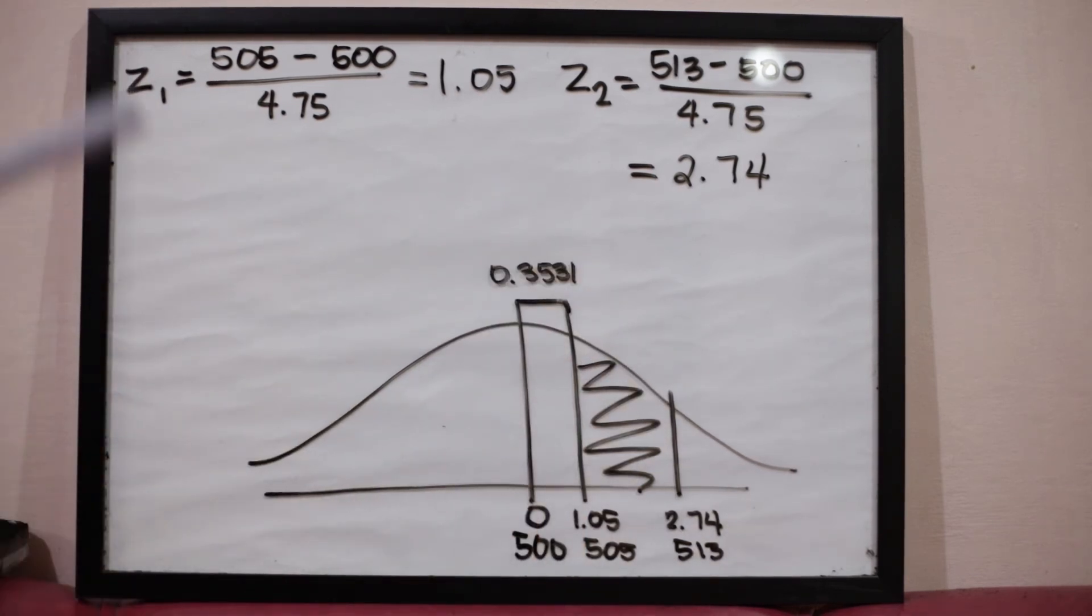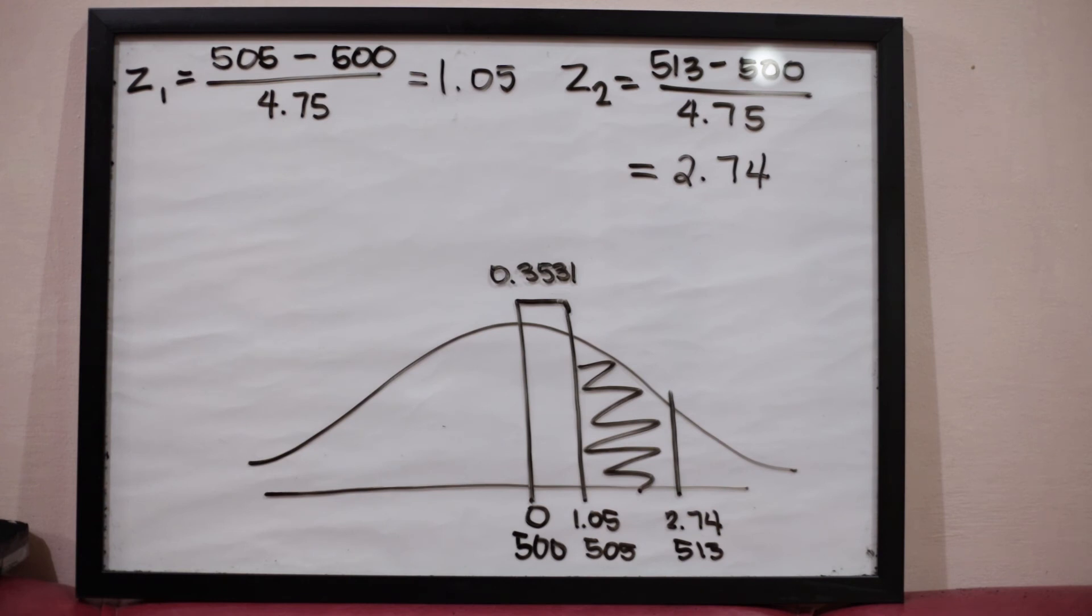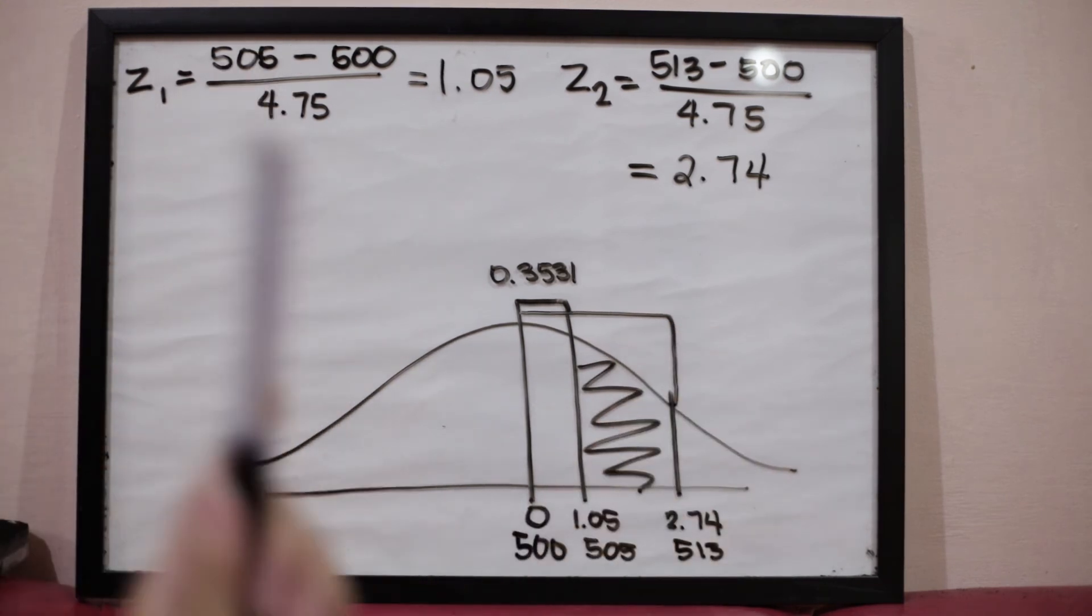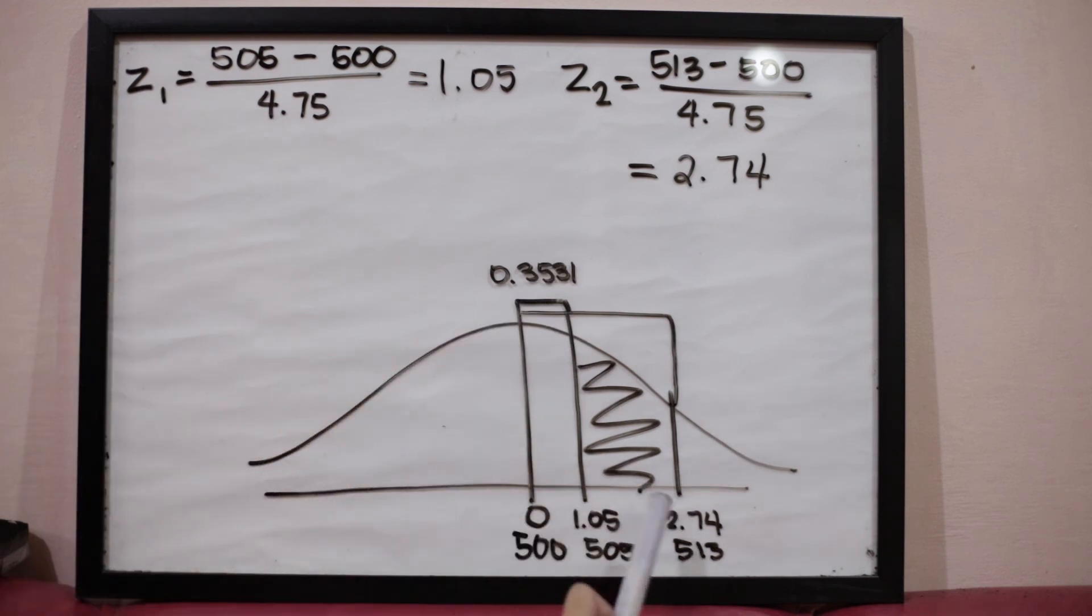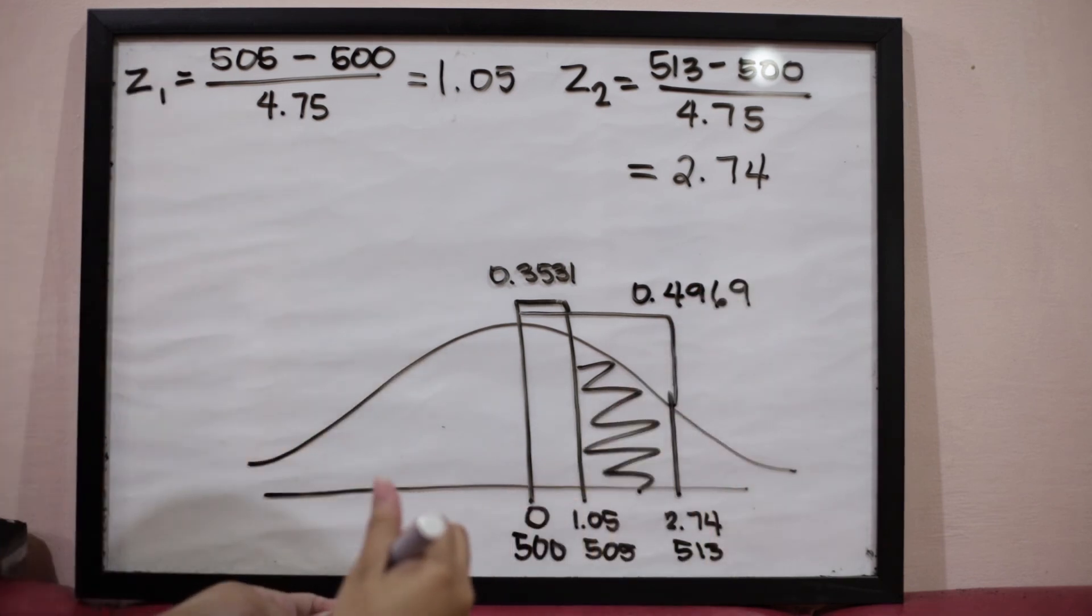1.0, then 0.05, you get the intersection and that is 0.3531. Next, the next z-score, which is 2.74, from zero up to 2.74. The table gives us from zero to 2.74. To get the area from zero to 2.74, we have to look at the first column at 2.7, then 0.04 in the first row. 2.7 in the first column, then 0.04 in the first row. Then you get the intersection. 2.7, then 0.04. That is 0.4969.